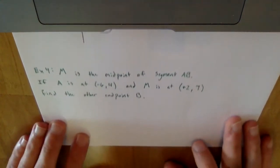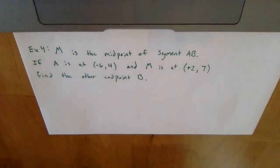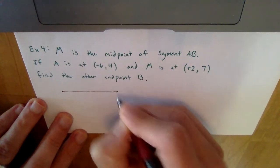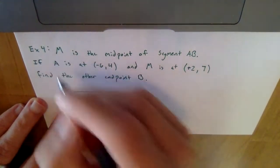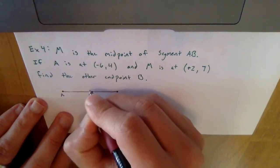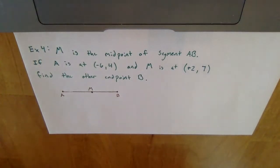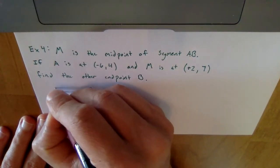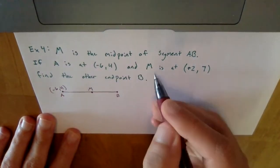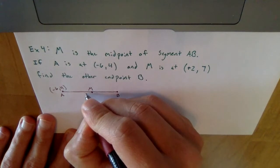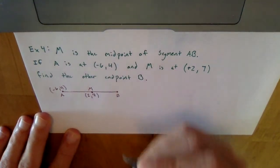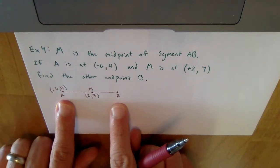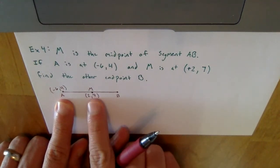The last problem: M is the midpoint of segment AB. A is at negative 6 comma 4, and M is at positive 2 comma 7. We need to find the other endpoint B. This is different because instead of two endpoints, we have one endpoint and the midpoint, so we have to work backwards to find B.